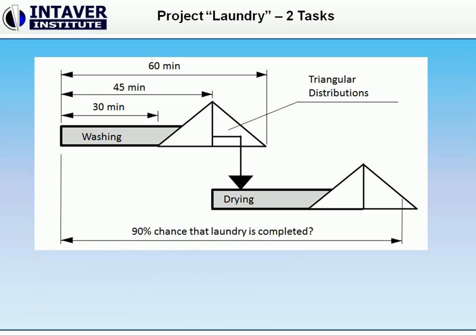Let's take a look at a simulation of project scheduling. Project schedule activities are linked to each other — for example, one activity can start only when the previous one is completed. Such relationships between all activities in the project schedule are called a precedence network.